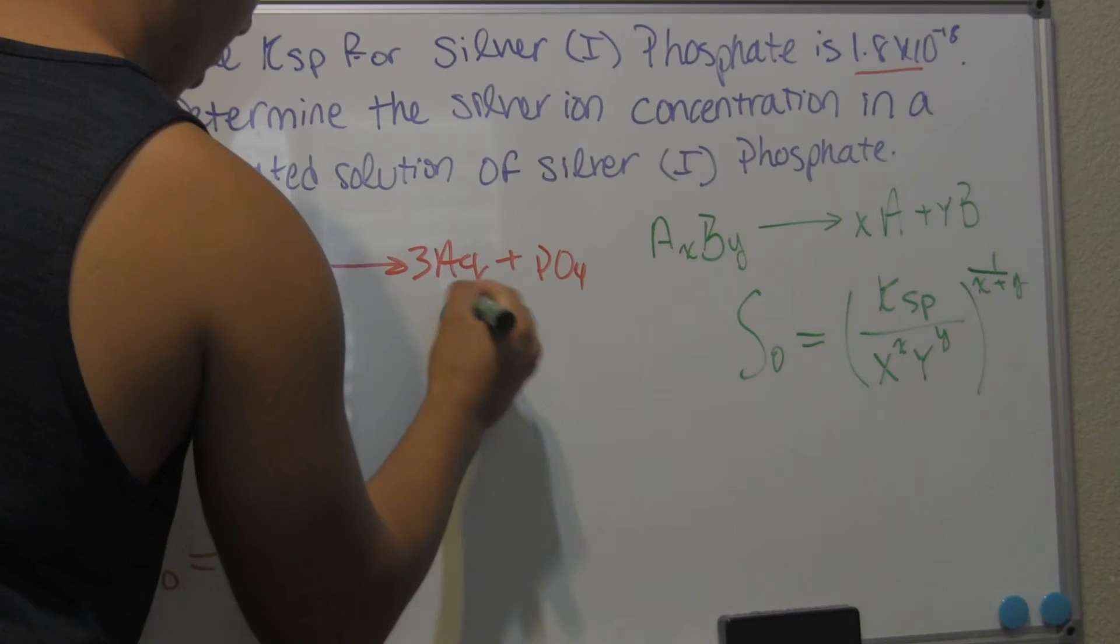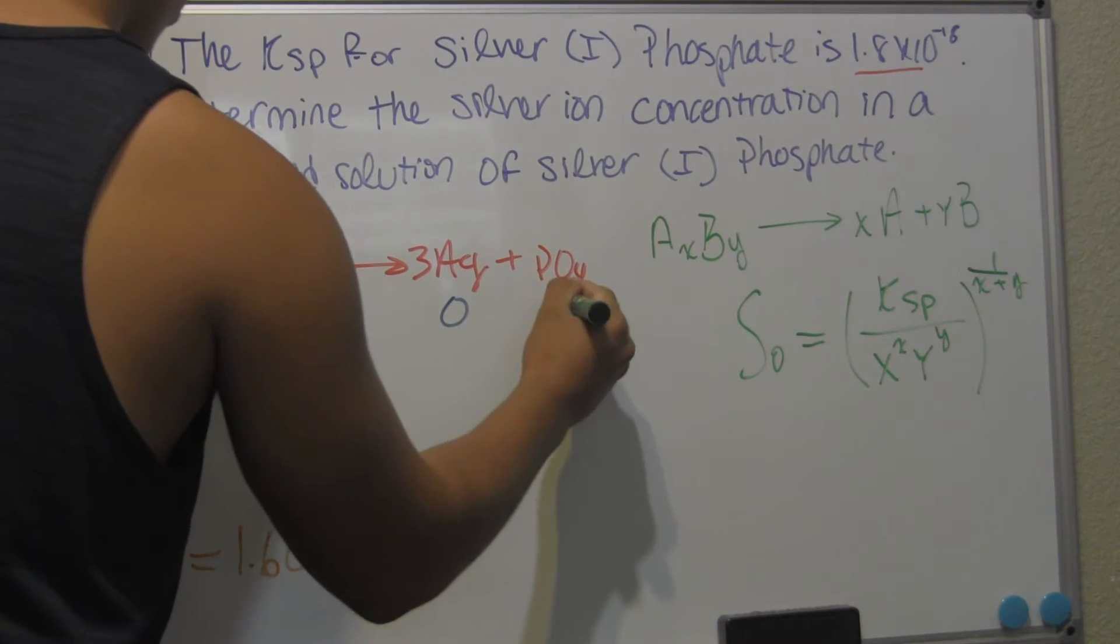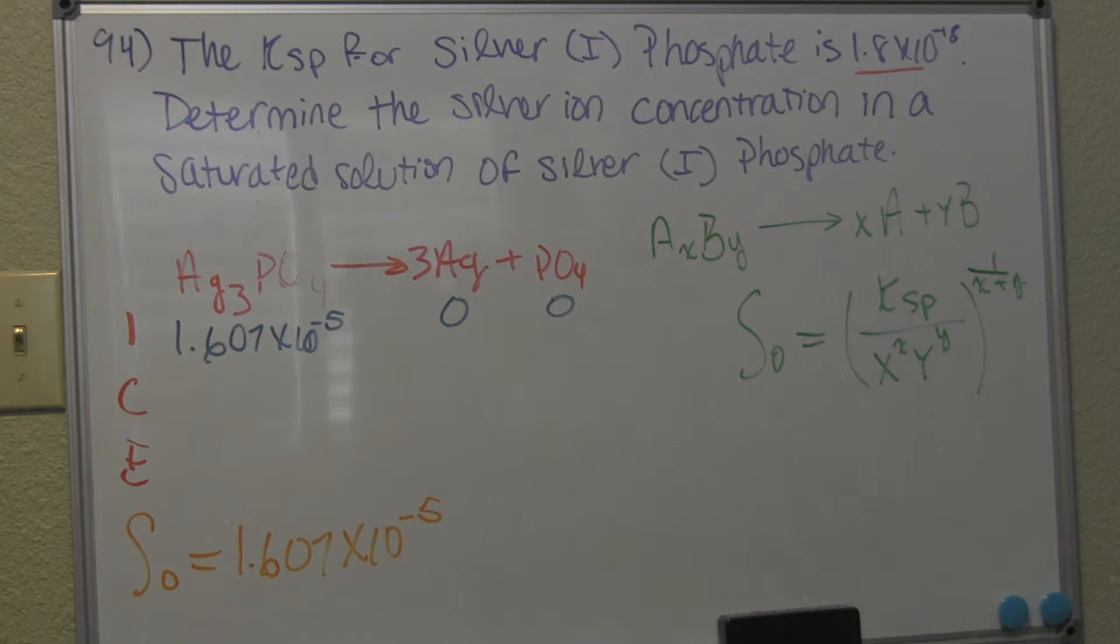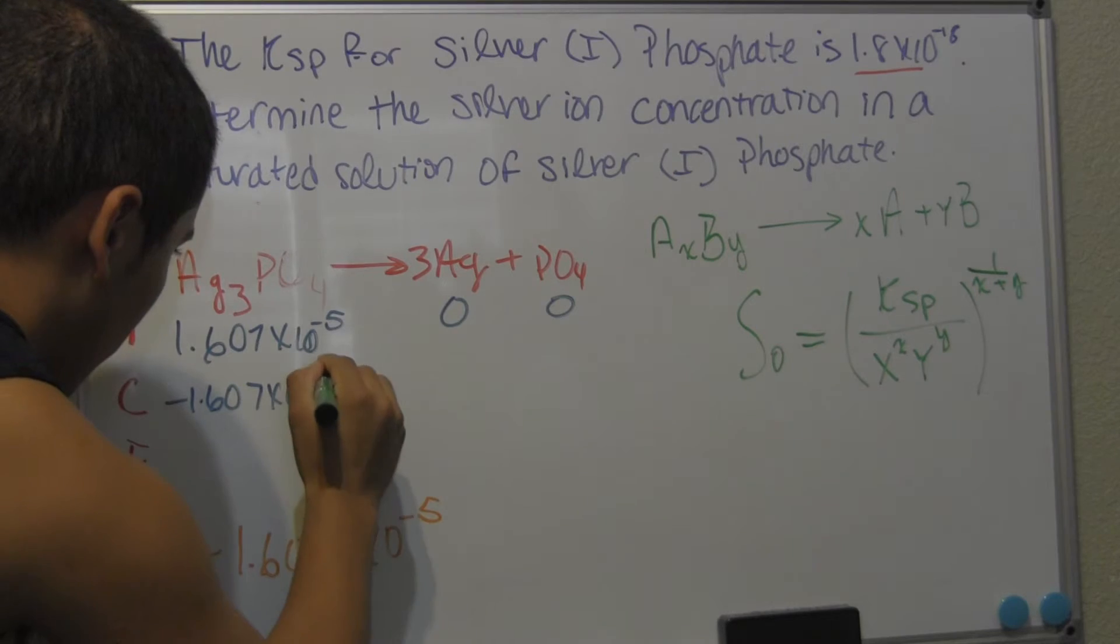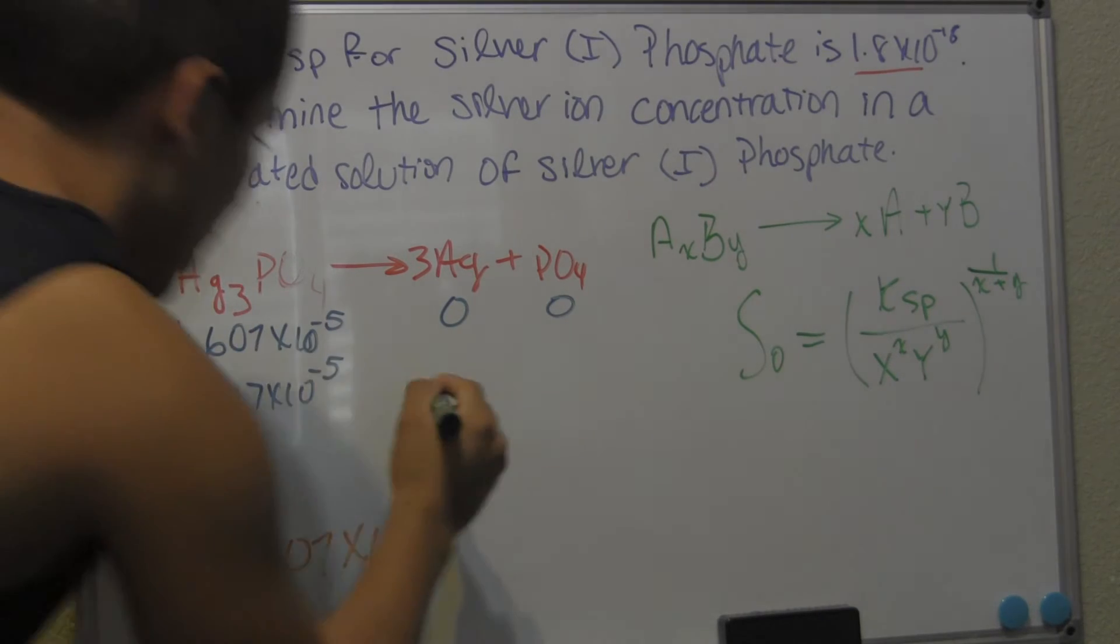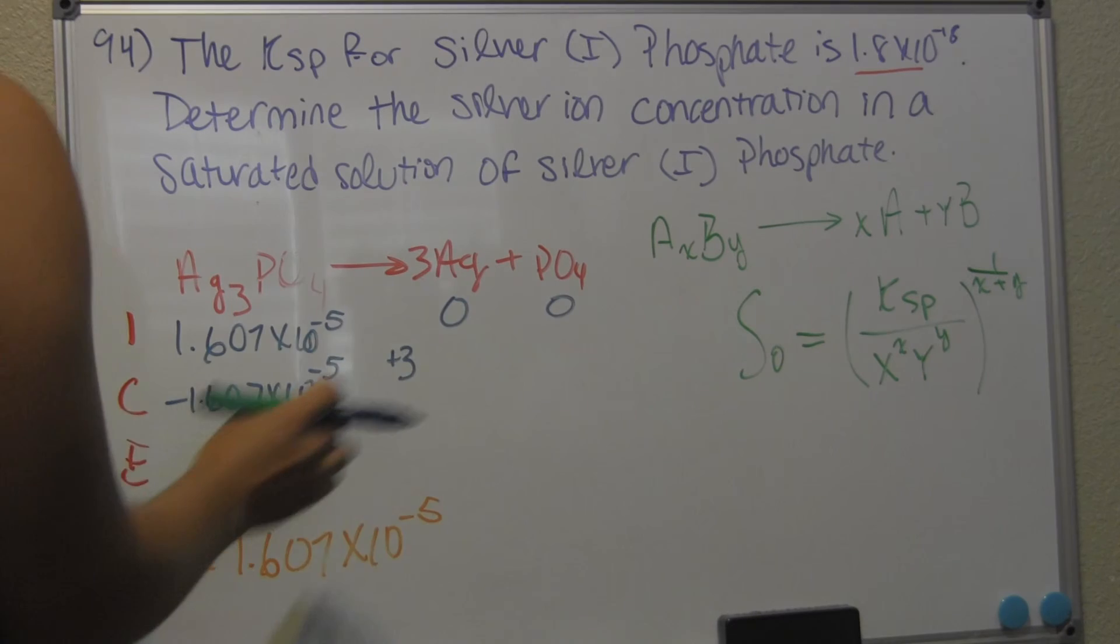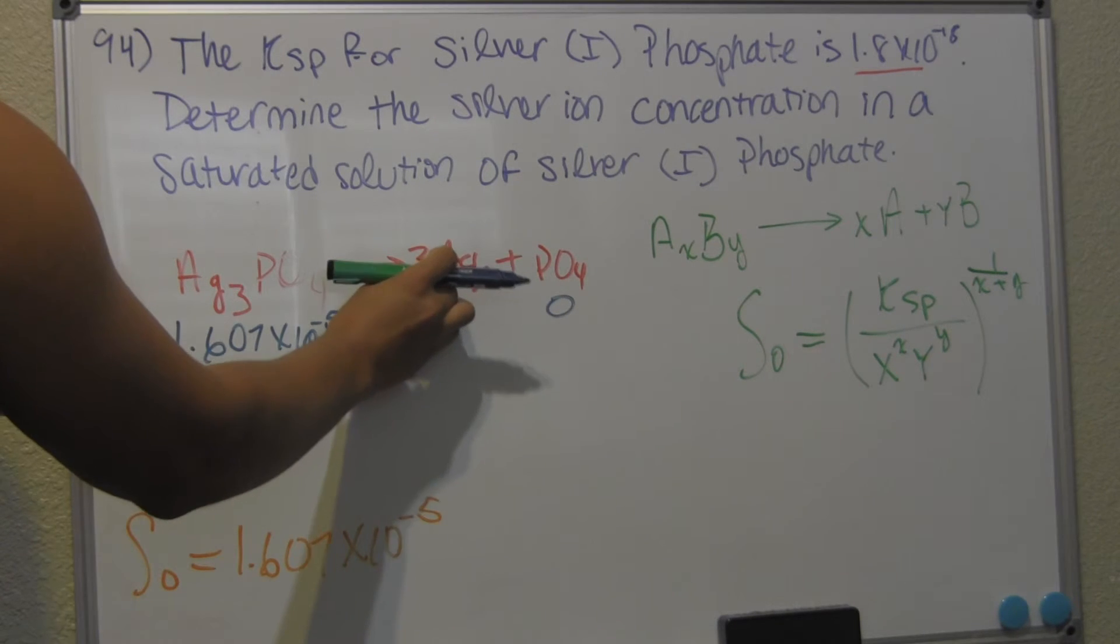All right. So 1.607 times 10 to the negative 5 is our initial concentration of silver and phosphate. And we don't start off with any silver or phosphate, so we're going to go ahead and put zeros right there. So it's going to change by negative 1.607 times 10 to negative 5. This is going to change by plus 3, because this coefficient right here